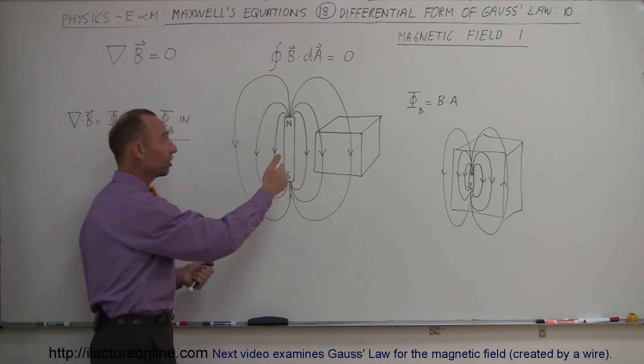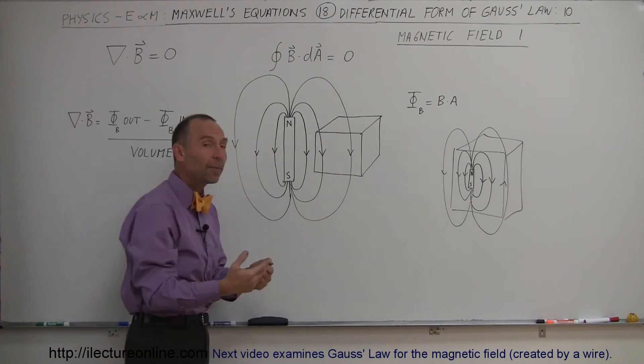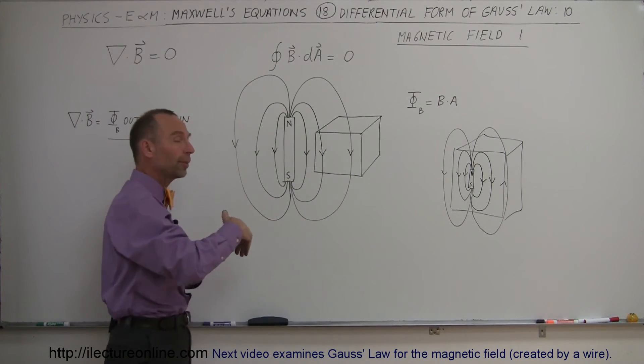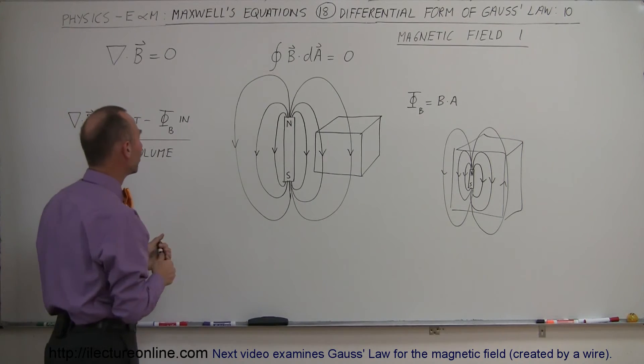But here, by simply looking at the drawing, you realize that, in this case, we have two field lines going in, two field lines coming out. The same amount of flux is going into the cube as coming out of the cube. That means that the difference between those two is equal to zero.